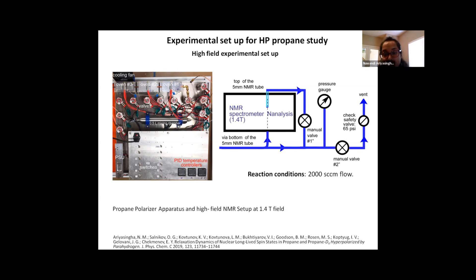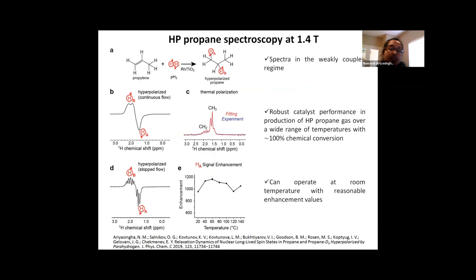One at a continuous flow condition where both of these valves are open and we acquire spectra as the gas is going through the spectrometer. And the other is the stopped flow condition where valve number two is closed immediately after closing the MFC, thereby trapping the gas inside and then acquiring spectral acquisition on the stopped gas. The thermally polarized spectra were also collected in the stopped flow conditions after letting the hyperpolarized gas to completely relax. This is the spectroscopy of hyperpolarized propane at 1.4 tesla. And as you see here, this is the typical expected pattern of the hyperpolarized propane in the weakly coupled regime. And these were done in ALTADENA conditions. So one peak is looking up and the other proton is looking down.